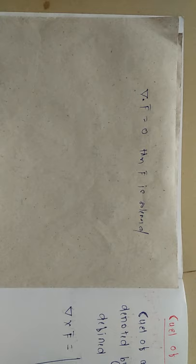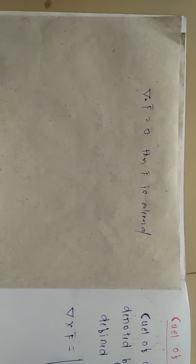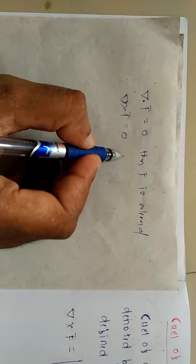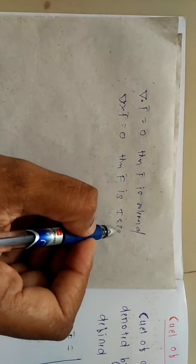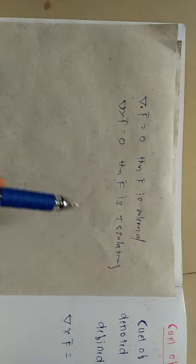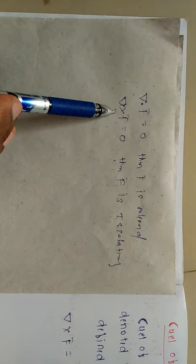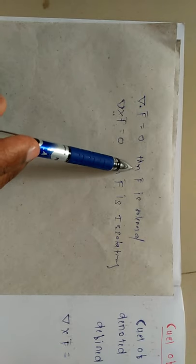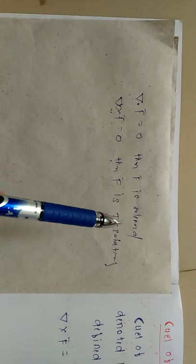In this lecture we will study the concept of the curl of a vector point function. That is del cross f-bar. If del cross f-bar is equal to zero, then f-bar is called irrotational. Curl means cross product; divergence means dot product. If del dot f-bar equals zero, f-bar is solenoidal. If del cross f-bar equals zero, f-bar is irrotational.